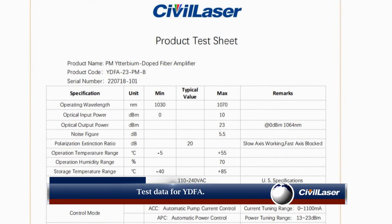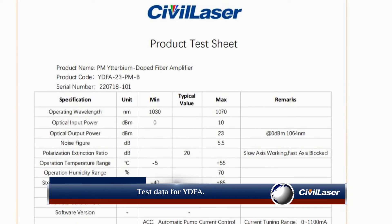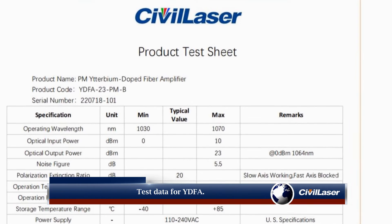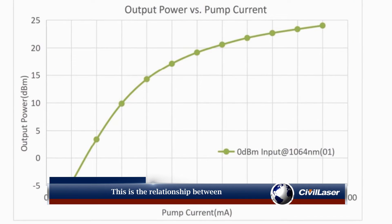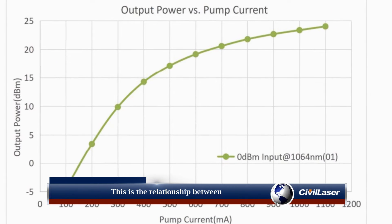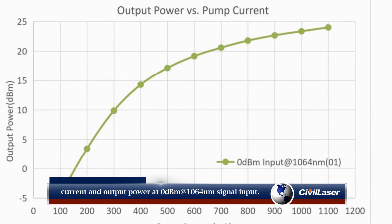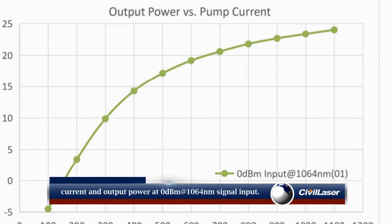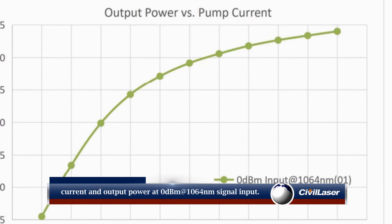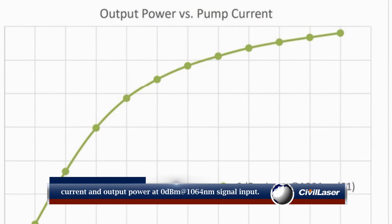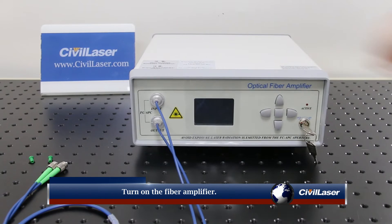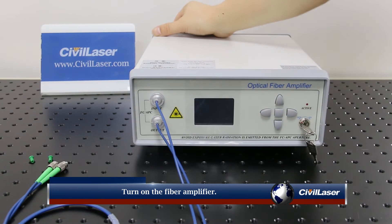Test data for the YDFA. This is the relationship between current and output power at 0 dBm at 1064 nanometer signal input. Turn on the fiber amplifier.